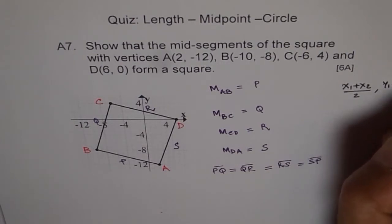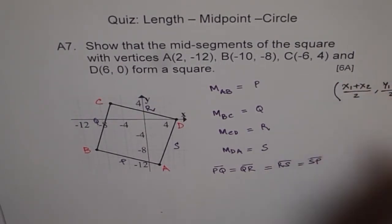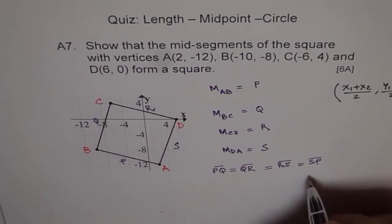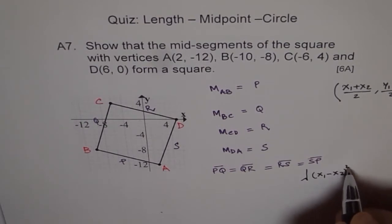And for the distance, the formula is square root of (x1 minus x2) whole square, plus (y1 minus y2) whole square.